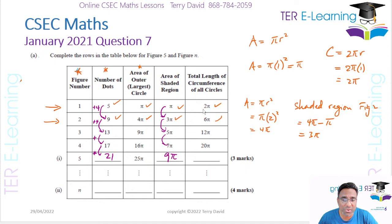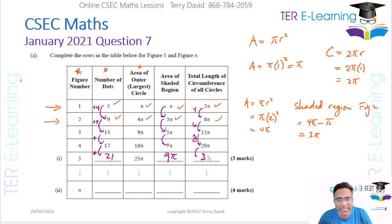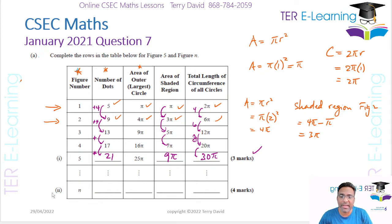For the total circumference column, the increases are not constant: we increase by 4, then by 6, then by 8. The pattern of increases goes up by 2 each time, so the next increase is 10, giving us 20π + 10π = 30π. That's three marks just for completing the table.